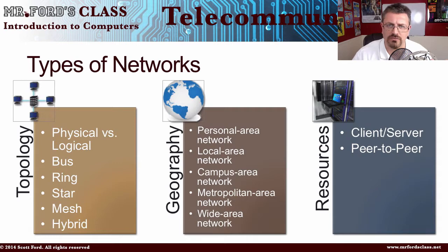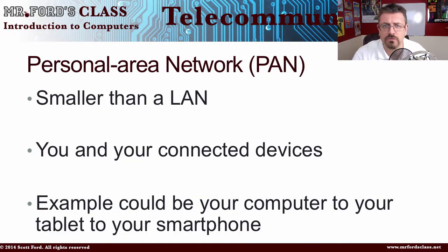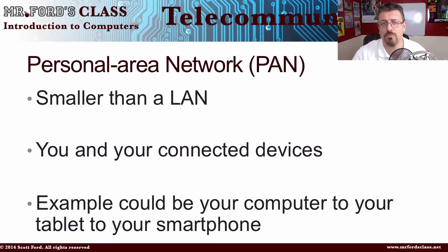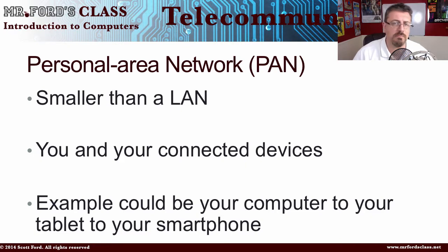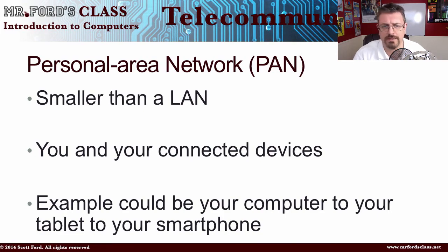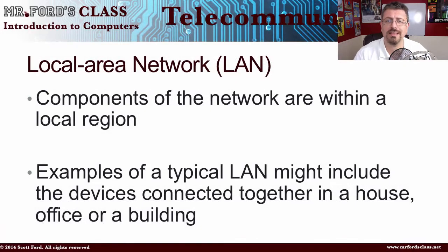Let's take a look at networks based off of geography — how networks are spread out. The first one is a PAN, or Personal Area Network. It's smaller than a LAN, and it's basically you and your connected devices. For example, just where I'm sitting right now: my computer, my microphone, my phone, my tablet — this would be my own personal PAN.